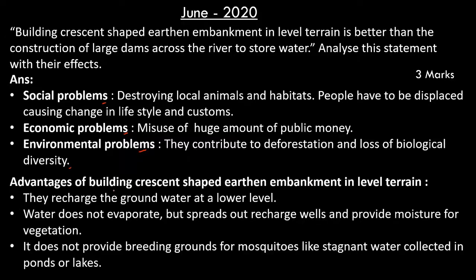Advantages of building crescent-shaped earthen embankments in level terrain are: they recharge the groundwater at a lower level; water does not evaporate but spreads out, recharging wells and providing moisture for vegetation; and they do not provide breeding grounds for mosquitoes like stagnant water collected in ponds or lakes. This question is for three marks — half a mark for each point.